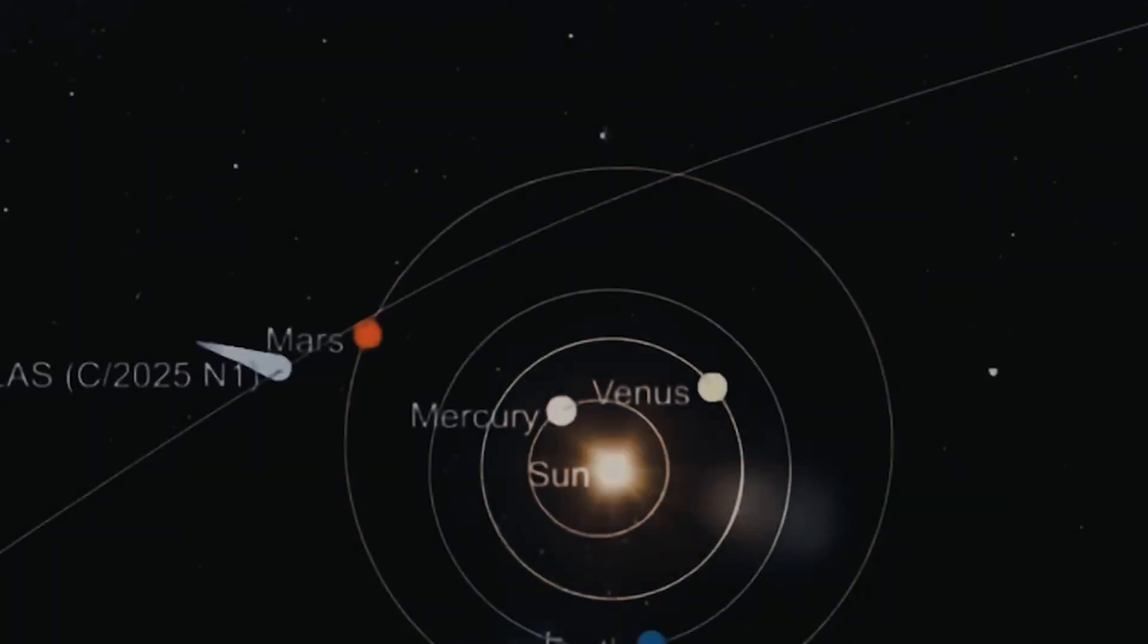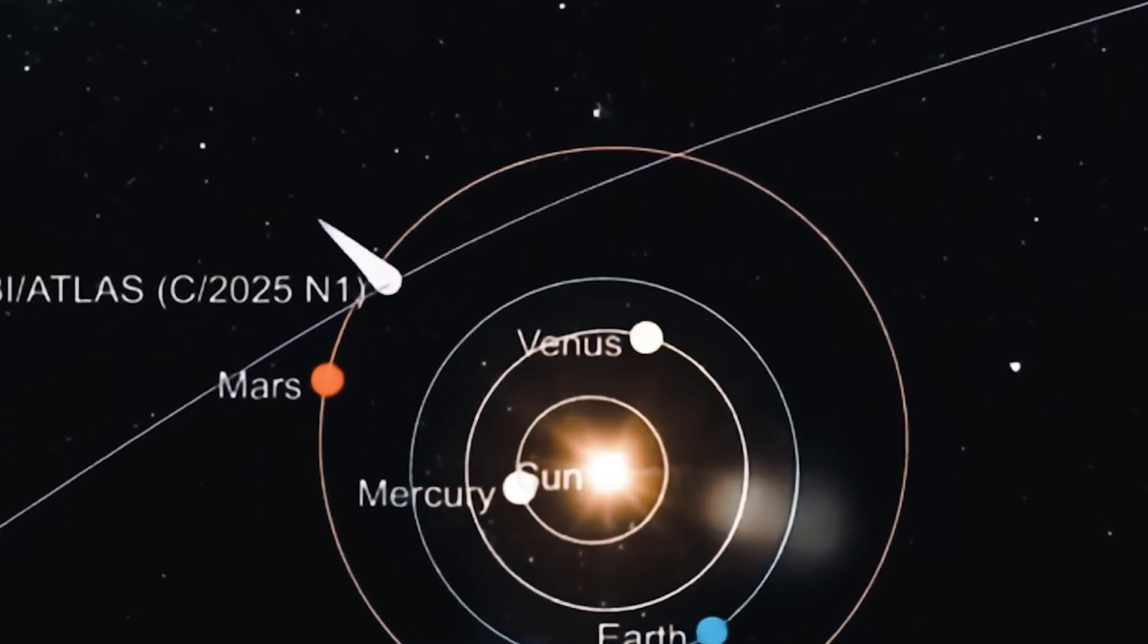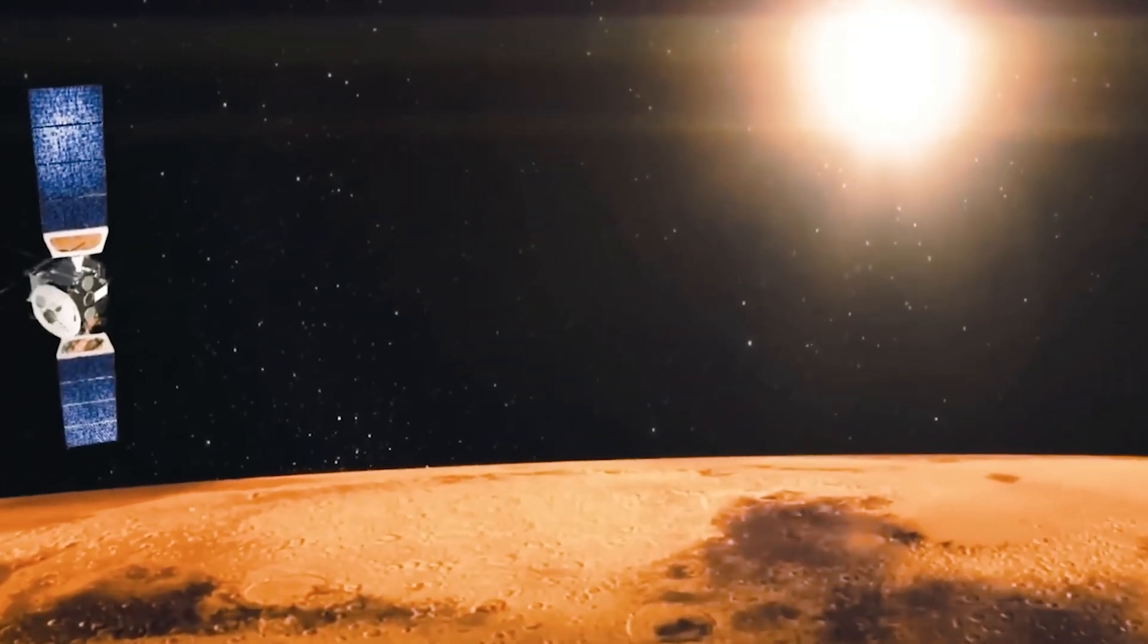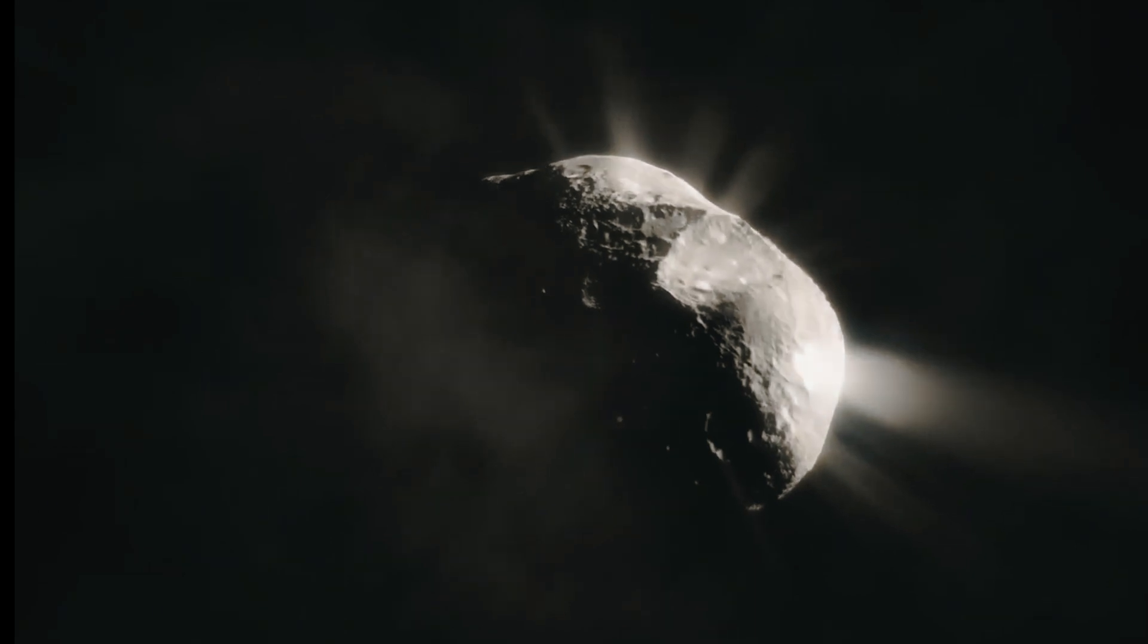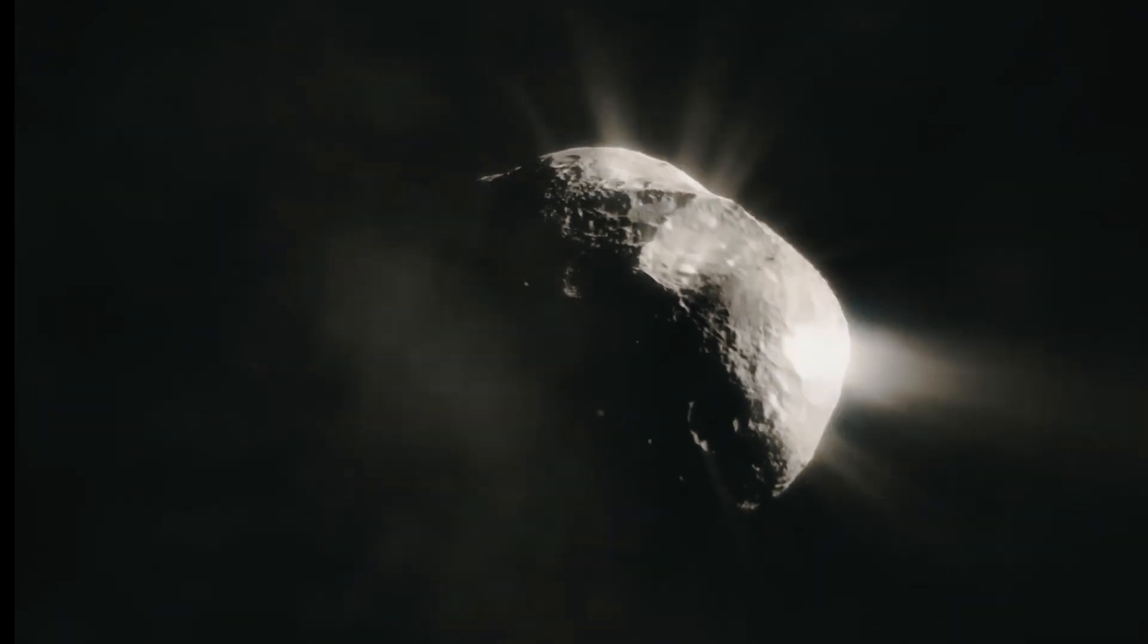By early October, it had swept across Mars' orbital path, where the ExoMars Trace Gas Orbiter managed to snap a rare distant image. That image showed a bright, compact coma, but no distinct tail, an early sign that 3i Atlas doesn't play by the usual cometary rules.